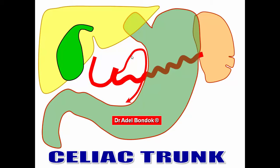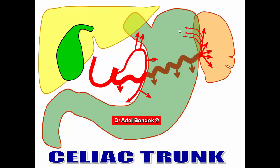The left gastric artery gives two branches: esophageal branches to the abdominal part of the esophagus, and gastric branches to the stomach. The splenic artery gives pancreatic branches along its course to the neck, body, and tail of the pancreas. At the hilum of the spleen, it divides into five to six splenic branches which enter the hilum to supply the spleen. It then gives short gastric branches to supply the fundus of the stomach — these reach the stomach through the gastro-splenic ligament.